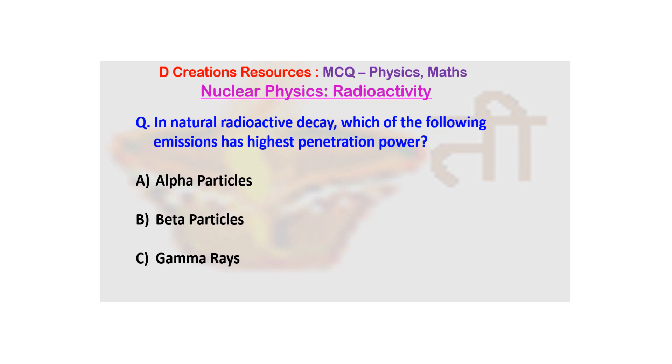Now if you recall we have done an episode about ionization power. And we have seen that amongst these three, alpha particles have the highest ionization power because of their mass. Now for penetration power, it is opposite.